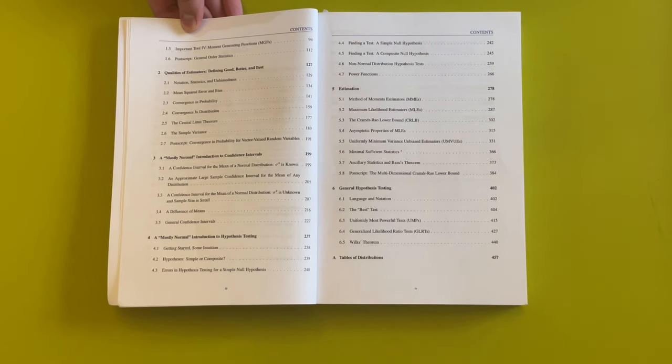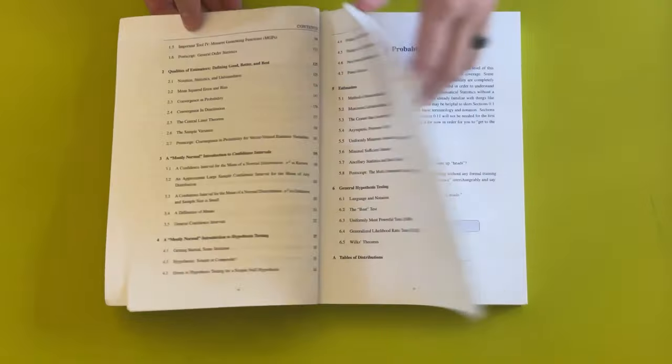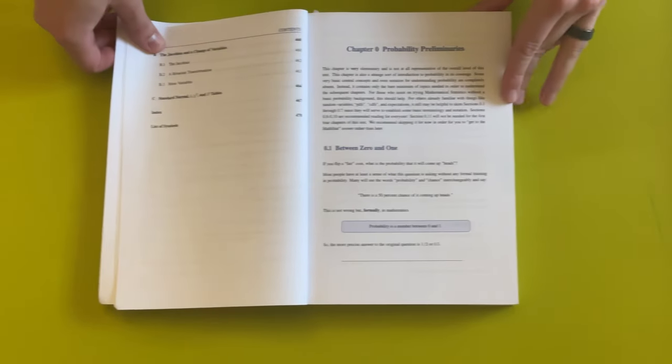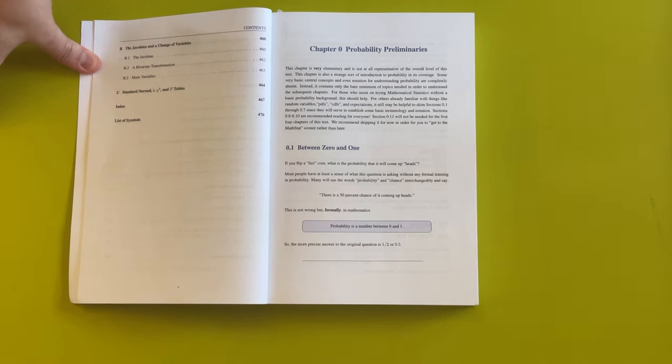This book has more color than your average math stats book. The little extra boxes and highlighting of words draw your attention, but don't let the colorfulness fool you. Just because it's colorful and has a nice font and big boxes doesn't mean that it's sacrificing in terms of rigor. This is a very thick book and takes a lot of pages to explain some of the difficult concepts.